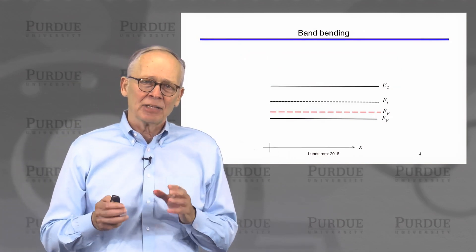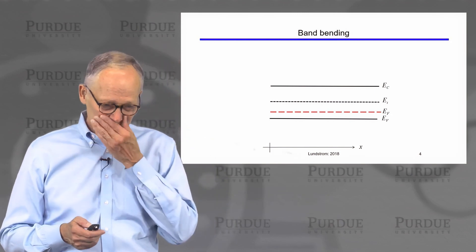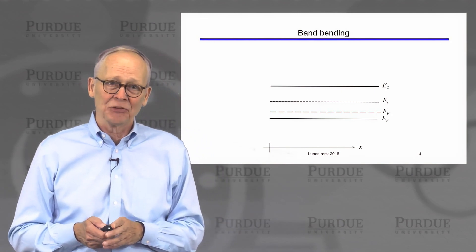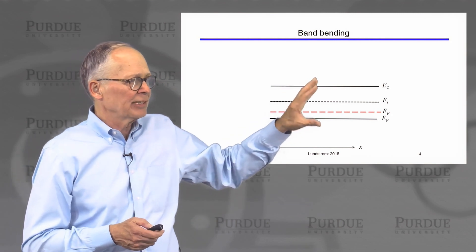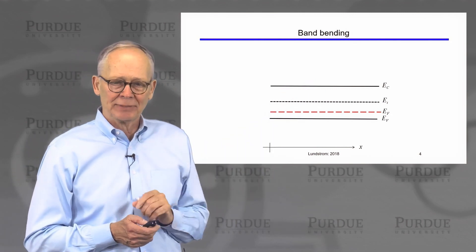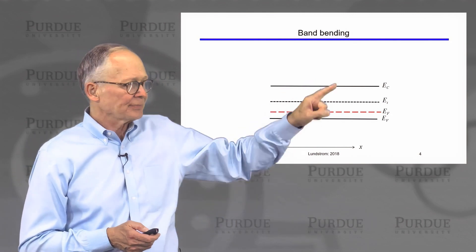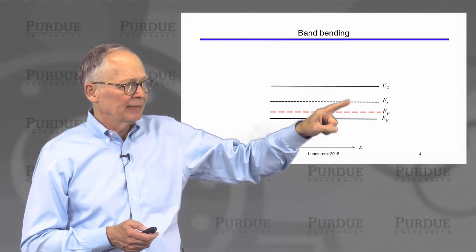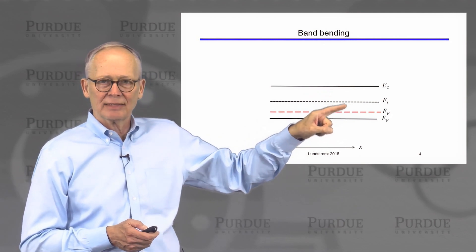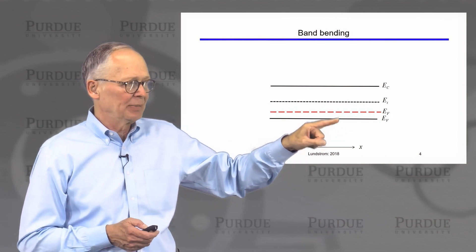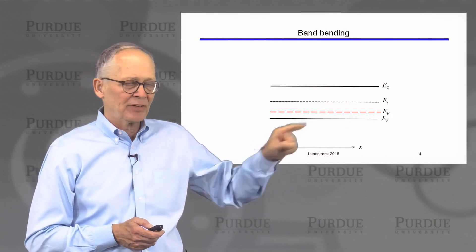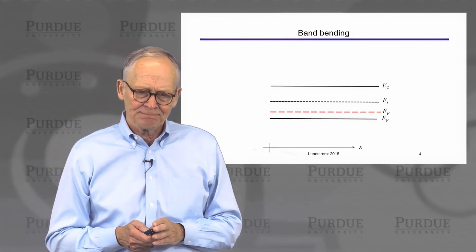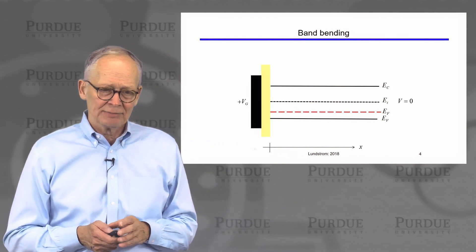Energy band diagrams are all about band bending, so we're going to try to understand what makes bands bend. Here's an energy band diagram for a P-type semiconductor. Here's the conduction band, here's the valence band. The intrinsic level is approximately the middle of the band gap, and the Fermi level is down near the valence band, so this is a P-type semiconductor.